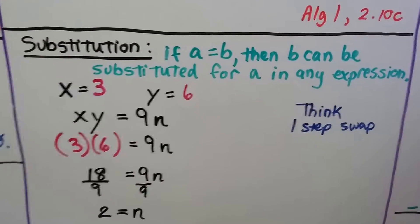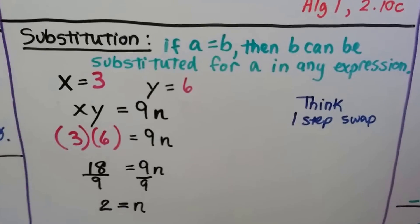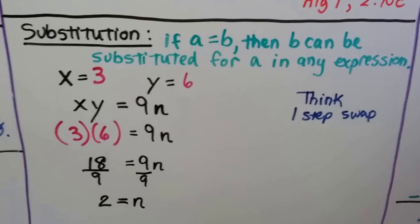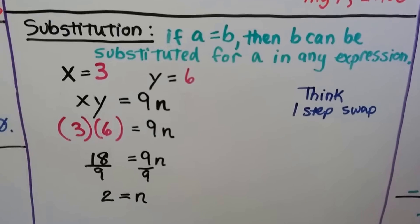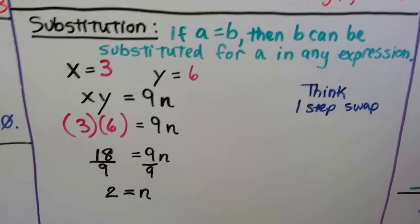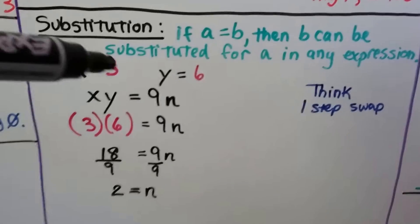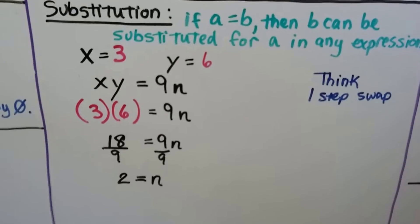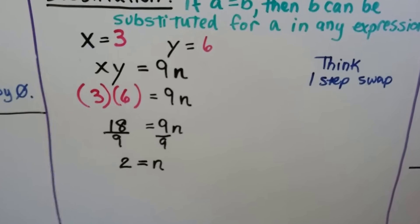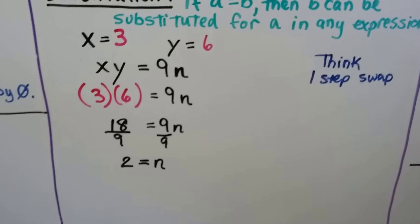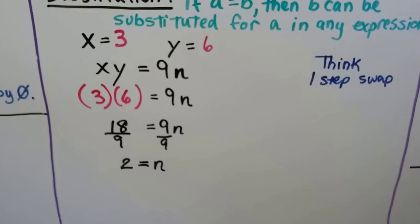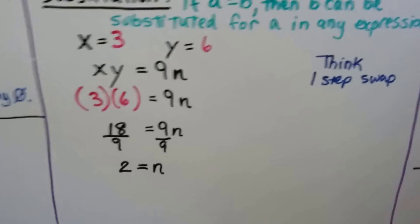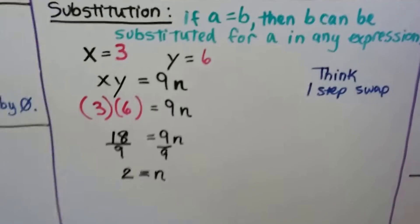The substitution property of equality says if A equals B, then B can be substituted for A in any expression. So if X equals 3 and Y equals 6, and we have XY equals 9N, we substitute: 3 times 6 equals 18, giving 18 equals 9N. Using the division property, we divide both sides by 9 and get 2 equals N. Think of it as a one-step swap.